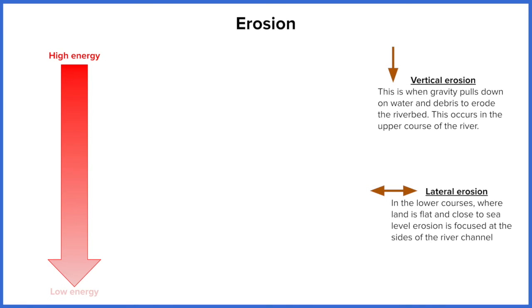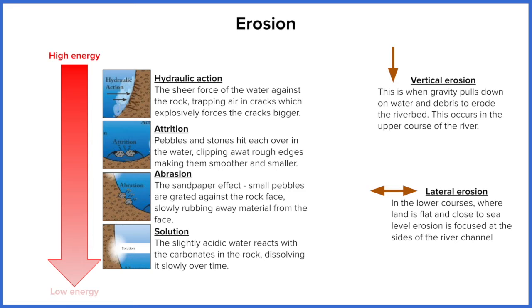Now we can apply these types of erosion in two directions. Vertical erosion is going to happen in the upper course and lateral erosion is going to happen in the lower course. Vertical erosion is that material being pulled down. Lateral erosion is happening at the sides of the river where vertical erosion can no longer happen.